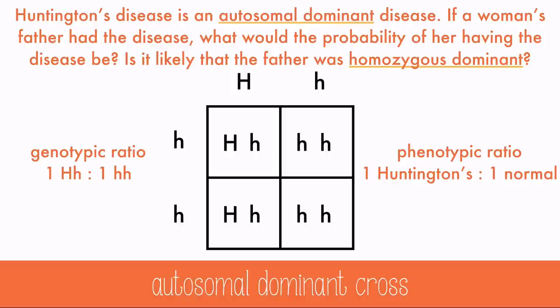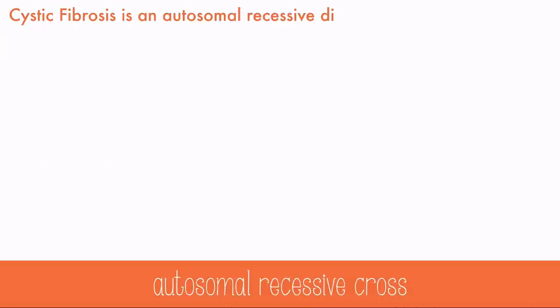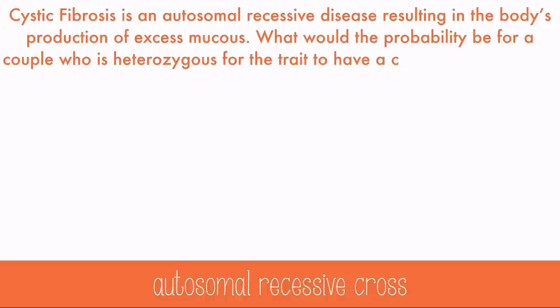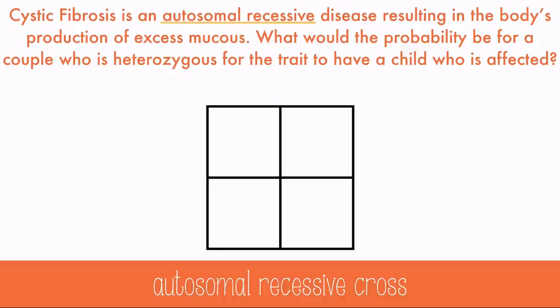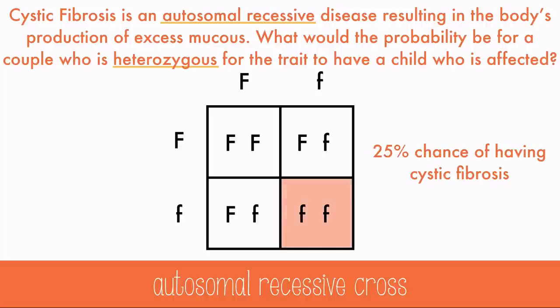She'll probably want to be tested knowing these odds. Let's look at a recessive disorder. Cystic fibrosis is an autosomal recessive disease resulting in the body's production of excess mucus. What would the probability be for a couple who is heterozygous for the trait to have a child who is affected? Since it's autosomal recessive, both recessive alleles would be needed to show the disease. The parents are both heterozygous — being heterozygous for a recessive trait can also be called being a carrier. Filling out the Punnett Square, there's a 25% chance they'll have a child with cystic fibrosis, and the other 75% would be unaffected.